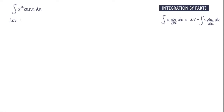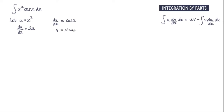I'm going to start off by saying let u equal x squared, and du by dx is going to be equal to 2x. So dv by dx is the second part of this term, which is cos x. We have to integrate that, so the integral of cos x is sin x. Popping these into the formula we'll have the following.